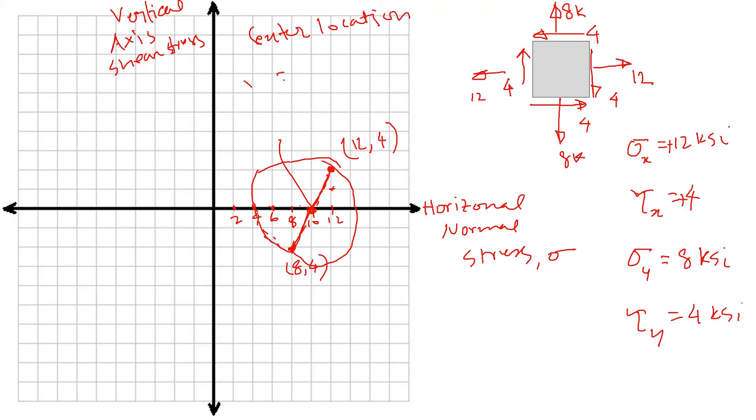So the center location—to find that I have a formula. Center location can be calculated using σ_min plus (σ_max minus σ_min) divided by 2. So σ_min was 8 ksi, plus max was 12, minus 8 divided by 2. So that is 2 plus 8, which is 10.